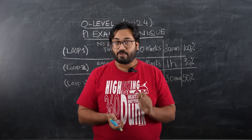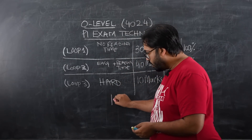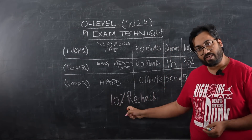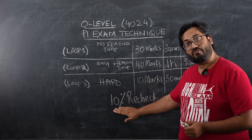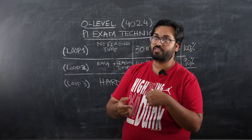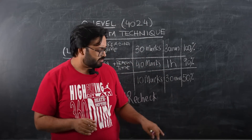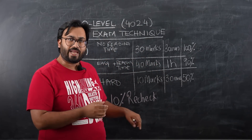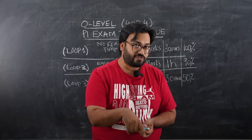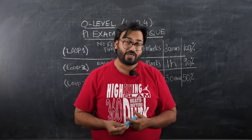The rest of the time in Loop 3 we are going to use to recheck our exam. There is a 10% rule I have always experienced: whenever we recheck our exam carefully, we find 10% of our silly mistakes. Whatever marks you're getting, you can increase them by around 10% through rechecking. Whenever you attempt a paper and check the mark scheme, you generally find silly mistakes amounting to about 10% of your grade.